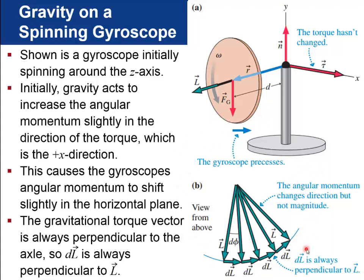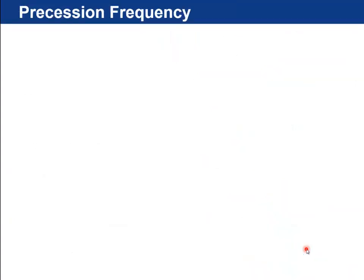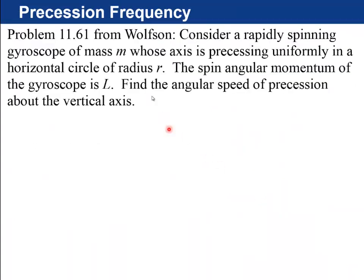And if you want to work out the precession frequency, it's actually a problem from Wolfson, problem 11.61. Consider a rapidly spinning gyroscope of mass m, whose axis is precessing uniformly in a horizontal circle of radius r. So r is the distance from the center of the circle up to the center of mass of the gyroscope. It tells you that the spin angular momentum of the gyroscope is L. What's the angular speed of precession, which is, I guess, the angular frequency, a precession about the vertical axis.